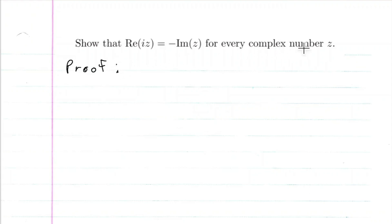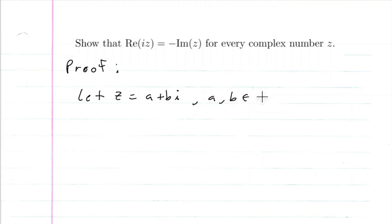First we need to identify z as a complex number. So we'll let z be equal to a plus bi, where a and b are real numbers. This is the definition of a complex number, so we know z is some complex number because it's in the complex number form.